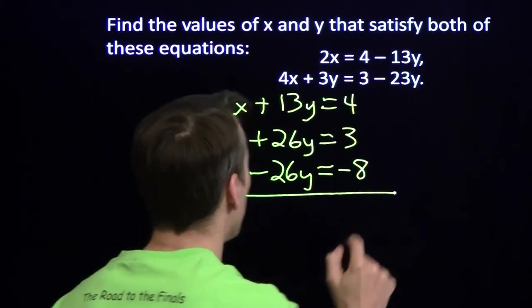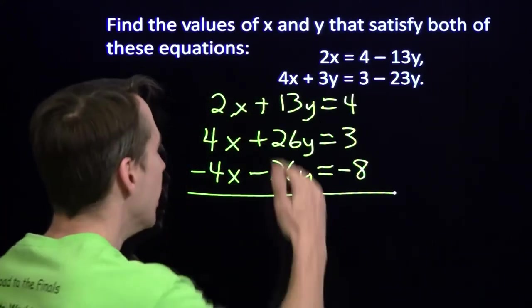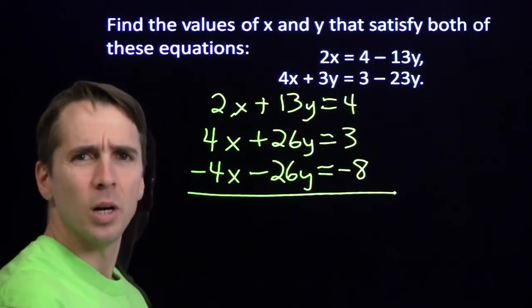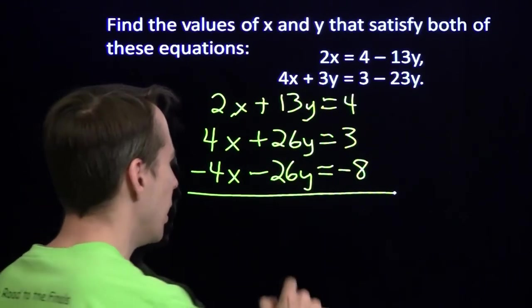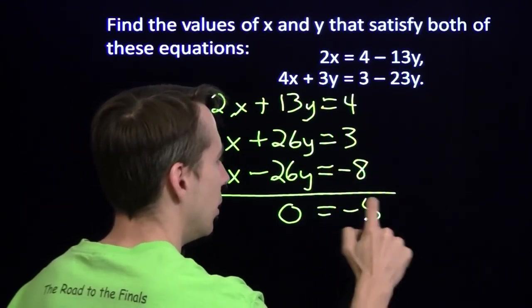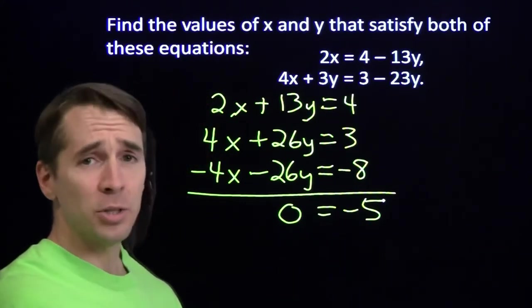4x minus 4x while it's 0. The x's are gone. 26y minus...so are the y's. The y's are gone too. 26y minus 26y. Gone. So we get 0 and 3 minus 8. Negative 5. 0 still isn't negative 5.